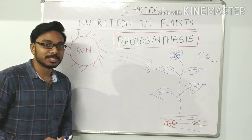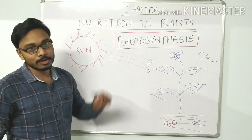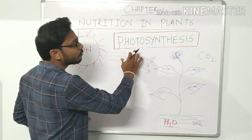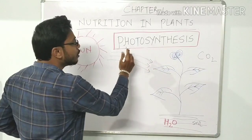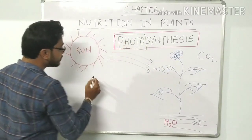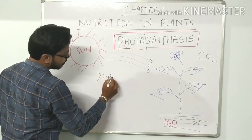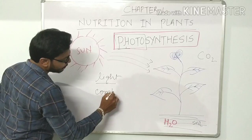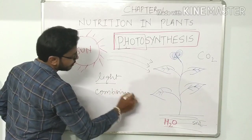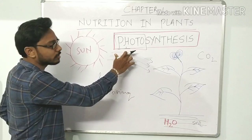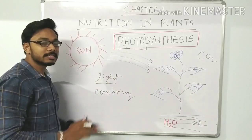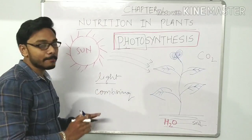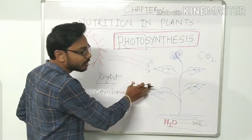Now, what is photosynthesis? By the name itself you can see two words combined: photo and synthesis. Photo means light, and synthesis means combining. So the combination of light is the meaning of photosynthesis. It is a process of food-making for the plants.